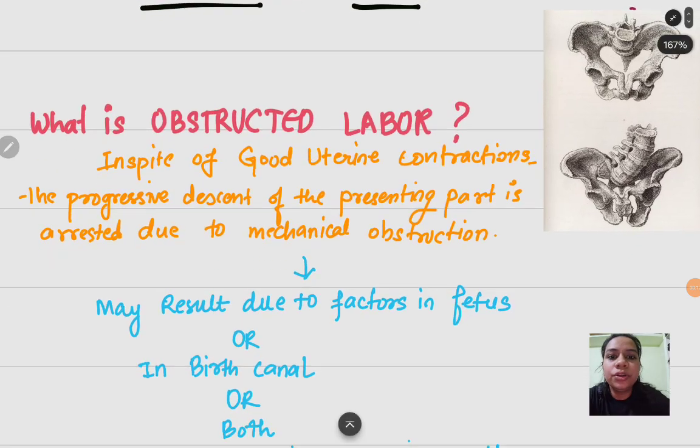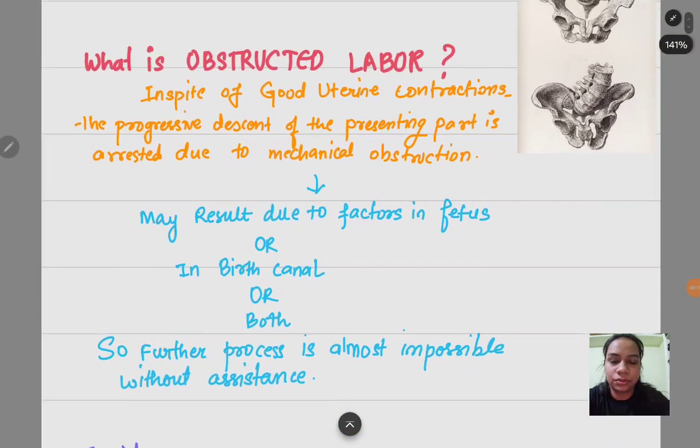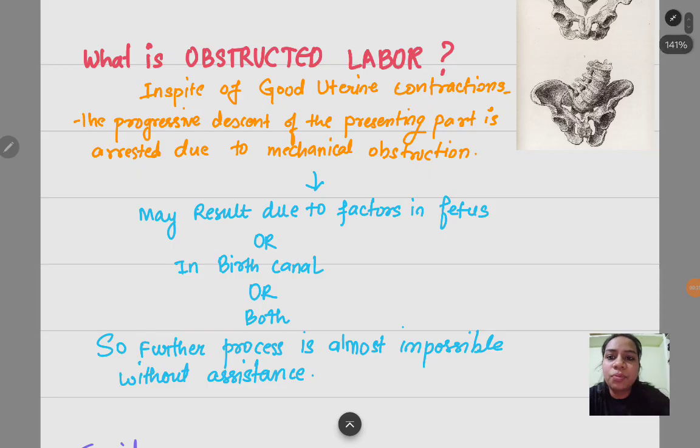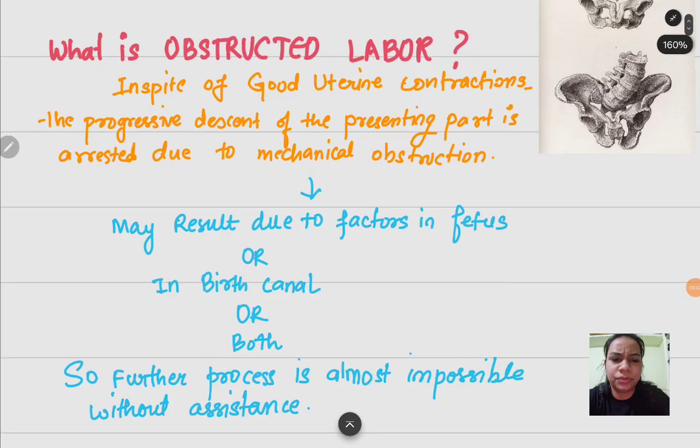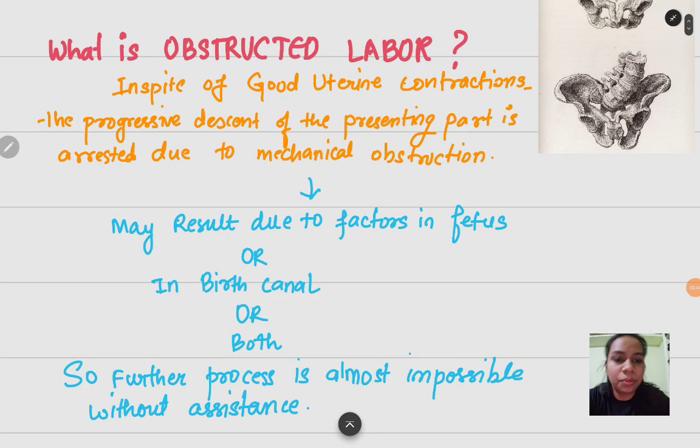In spite of good uterine contractions, if there is progressive descent of the presenting part arrested due to any mechanical obstruction, whether on the fetus side or mother's side, that may result due to factors in the fetus or in the birth canal or both.